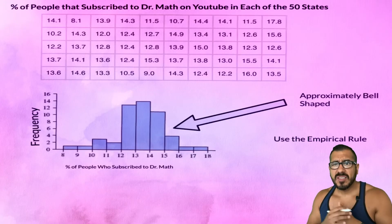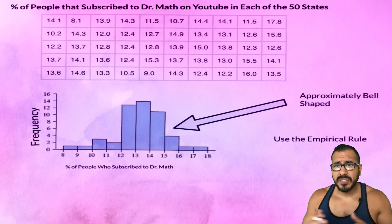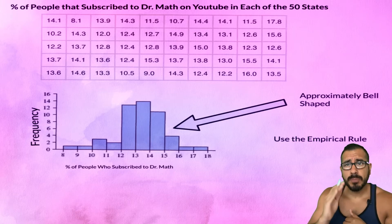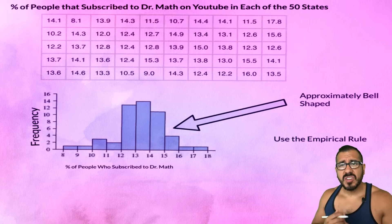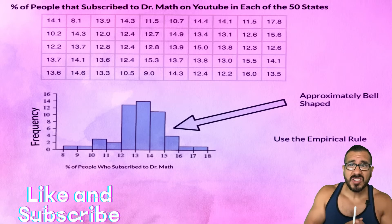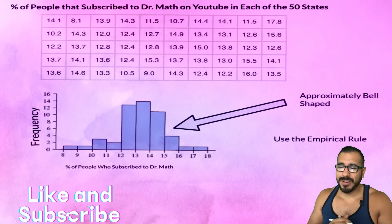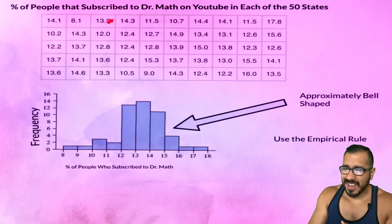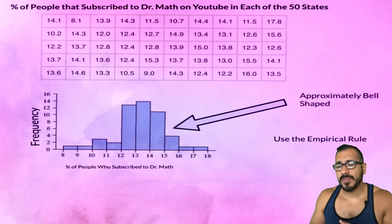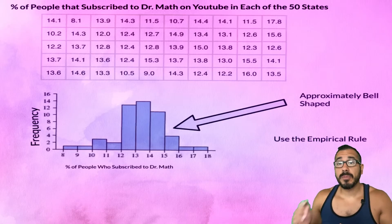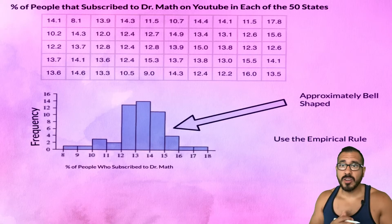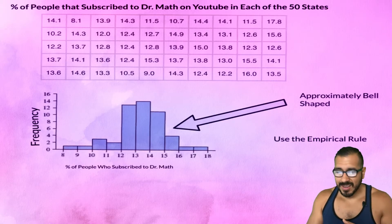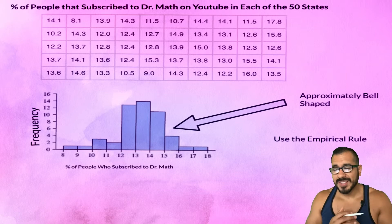Let's look at some numbers to see how to apply the empirical rule. Say Dr. Math Studios visited all 50 states and recorded what percent of the population in each state is subscribed to Dr. Math on YouTube. We went to all 50 states — it took a while — and got the population percent subscribed from each state.